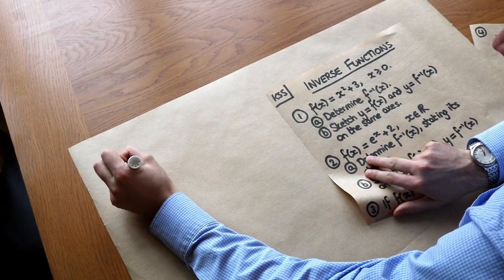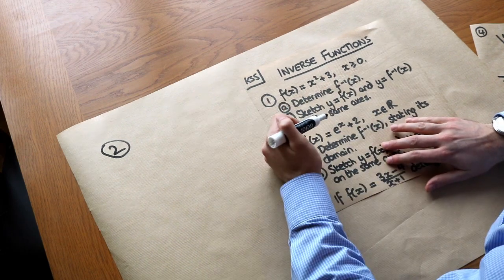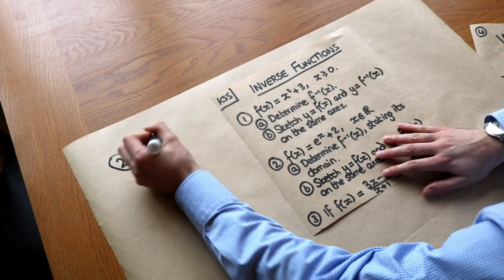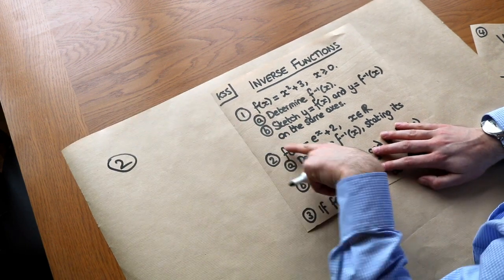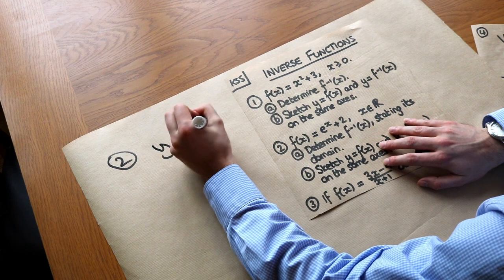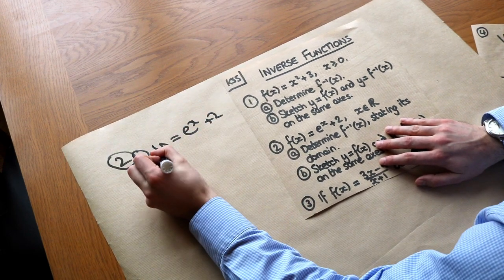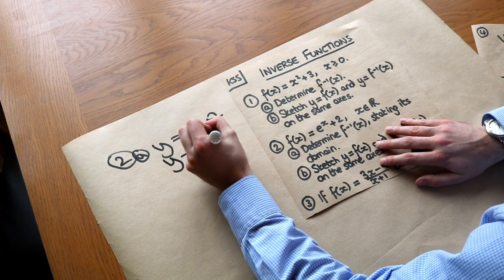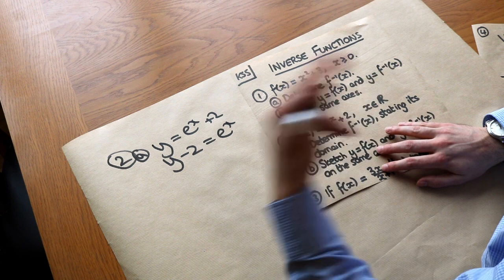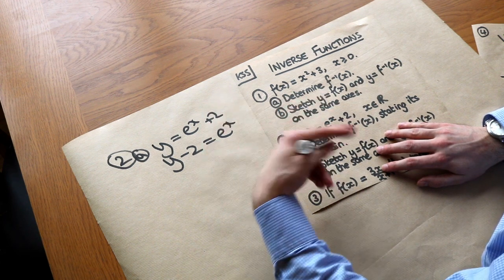For the second question — and if you haven't seen the exponential function e^x I recommend watching my video on that first — we want to determine the inverse function. So we write y = e^(x + 2). Then we make x the subject: minus 2 from both sides. To get rid of the e to the power, we apply the inverse, which is natural log, so we take ln of both sides.